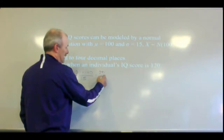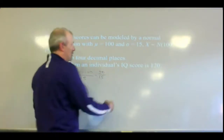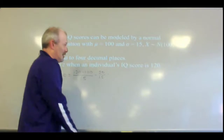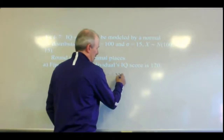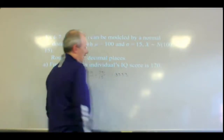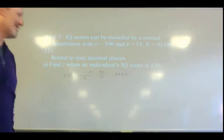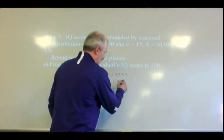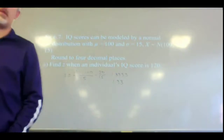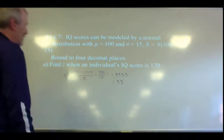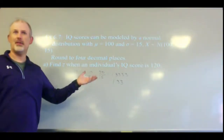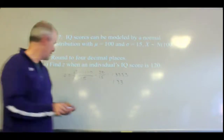So this is 20 over 15, which gives us 1.3333. Like I said, on the table they only deal with two decimal places, so there's not really any reason to go to four decimal places. 1.33 is all we're going to look for. We've done a couple of these already.